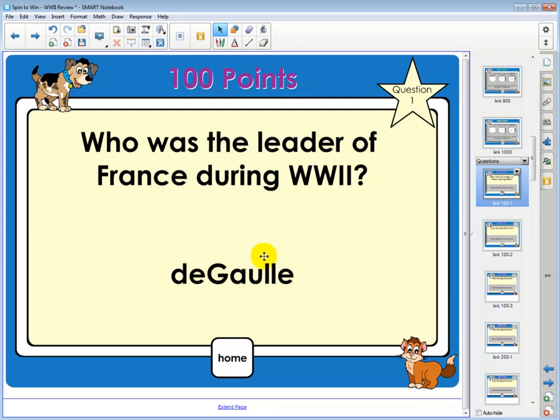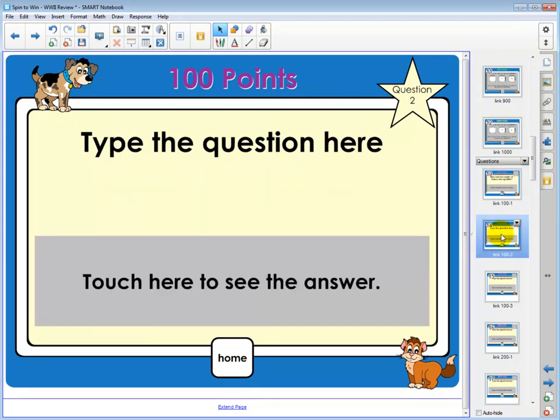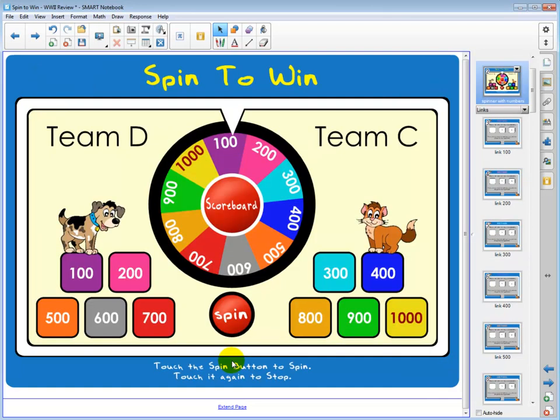All you need to do next is go to each of the question pages and follow the same procedure. It helps to have your questions and answers prepared before you begin editing the Spin to Win template. Let's take a quick look at one way to play the game. I'm going to click on my home button to go to the main spinner page.